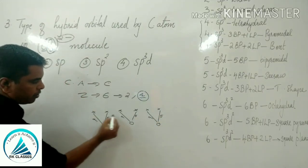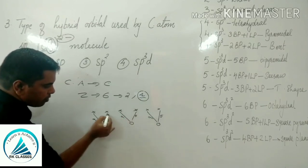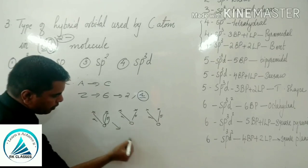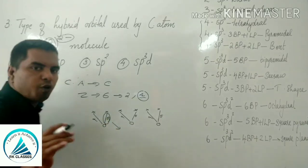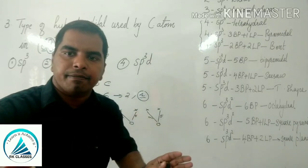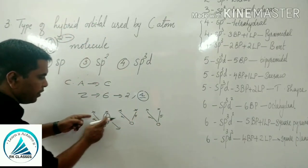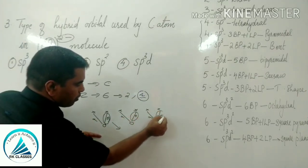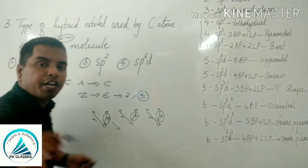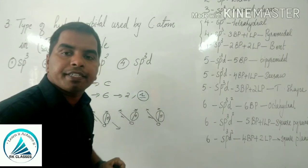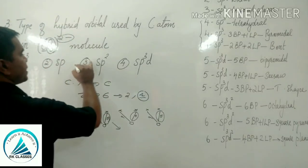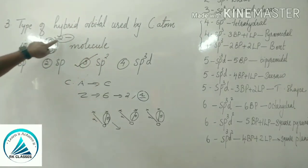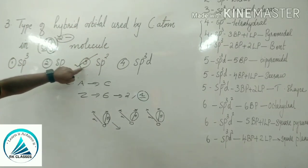We have 3 bond pairs from the sigma bonds. Pi bonds are not counted as bond pairs. So we have only 3 bond pairs, and with 3 bond pairs, hybridization is sp2. The hybrid orbital used by the carbon atom in CO3 2- is sp2.